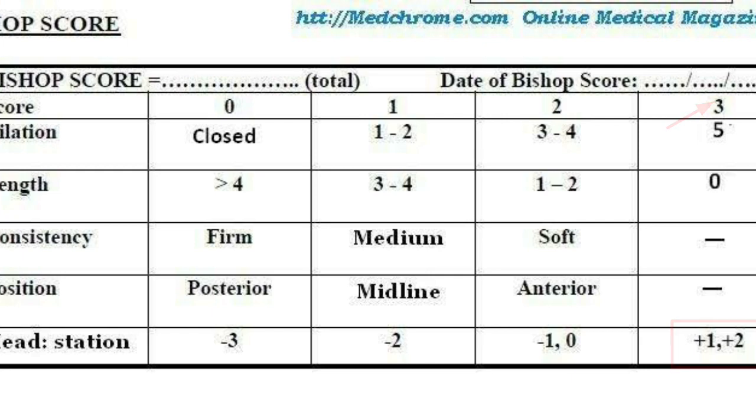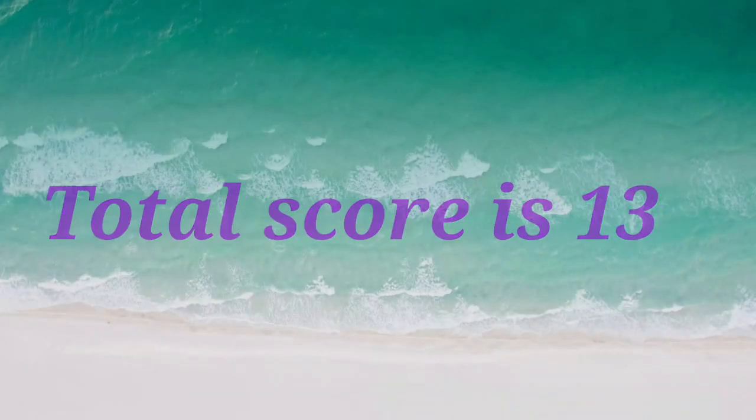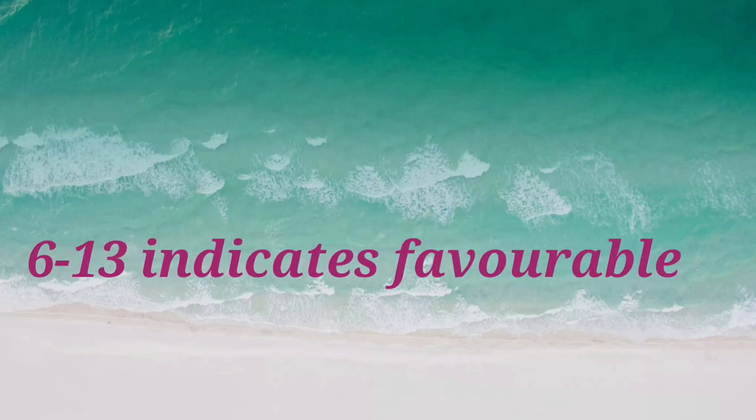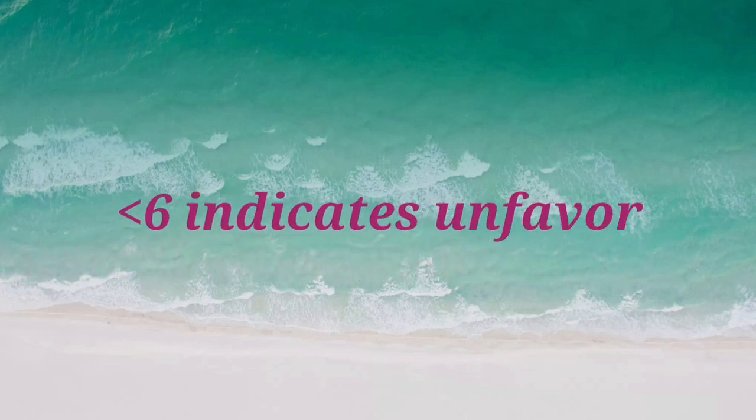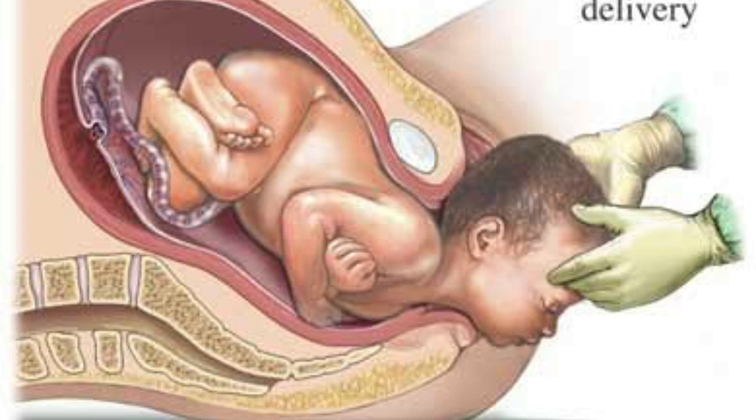The total maximum score is 13. A score of 6 to 13 is considered a favorable score, meaning it is favorable for induction of labor with a good chance of vaginal delivery. A score below 6 is considered unfavorable for induction of labor, meaning there is less chance of vaginal delivery with induction. In such cases, if induction is indicated, we need to use cervical ripening agents.